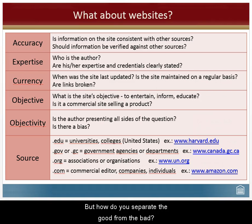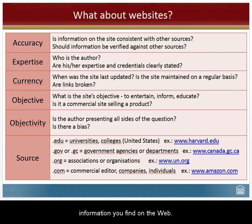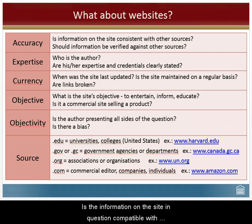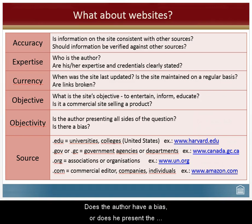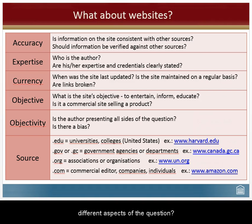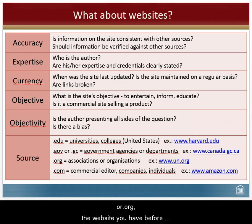But how do you separate the good from the bad? Here's a list of questions that can help you evaluate the information you find on the web: Is the information on the site compatible with other sources? Who is the author? When was the website last updated? What is the purpose of the site — does it entertain or inform? Does the author have a bias, or does he present a different aspect of the question? And finally, here's a tip: look at the extension of the website. If it is .edu, .gov, or .org, the website you have before you is most likely of quality and could be trusted.